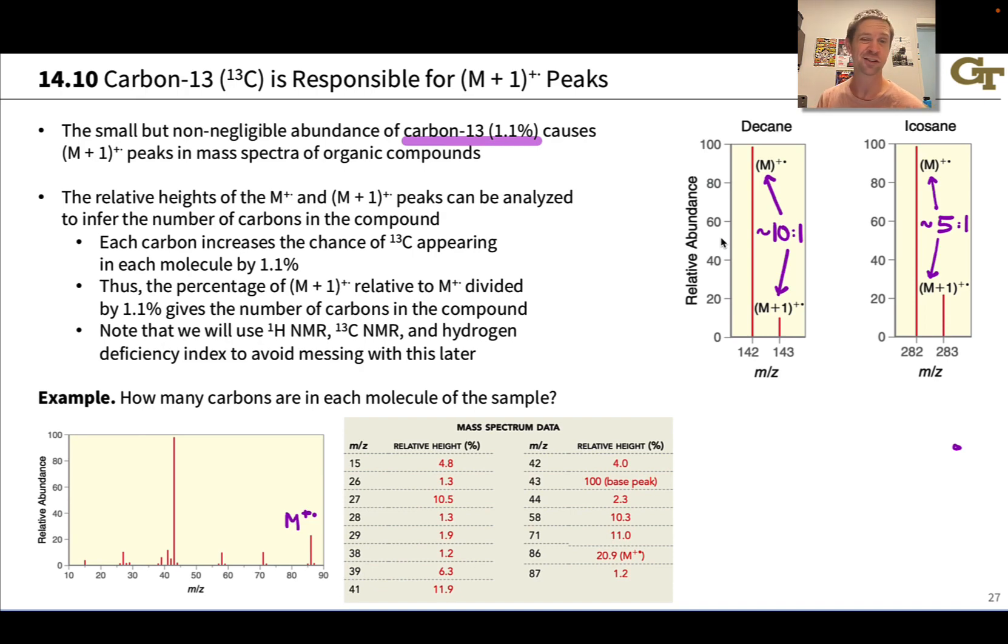Each carbon increases the chances of a carbon-13 appearing by 1.1%, and so we can do some math and think statistically to reason about the number of carbons in the sample based on the relative abundance of M+1.